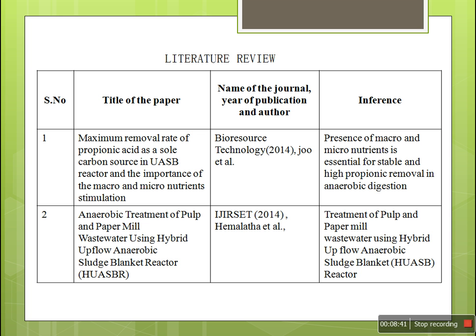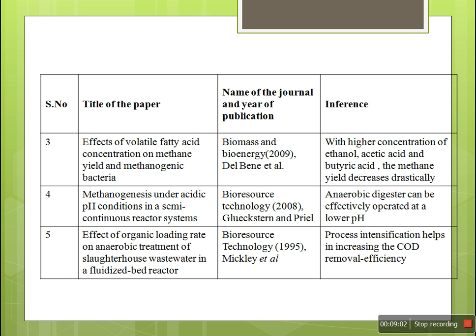Literature reviews indicate that the maximum removal rate of propionic acids as a sole carbon source in a UASB reactor increases the amount of biogas produced, and anaerobic treatment of pulp and paper mills is achieved. An effective removal of volatile fatty acid concentration can yield more methanogenic bacteria, which increases the efficiency of biogas. Methanogenic acid and pH conditions in semi-continuous reactor systems can be achieved for efficient control of biogas production.